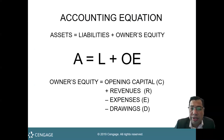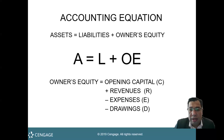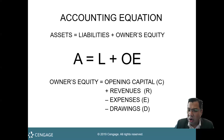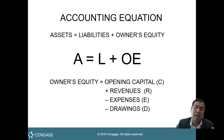Let us move to accounting equations. Assets is equal to liability plus owner's equity. For example, your assets are $100,000, your liability is $40,000, so your owner's equity equals $100,000 minus $40,000, which gives you $60,000. Assets are all the resources controlled by the firm as a result of past transactions that give the business a potential future inflow of resources.